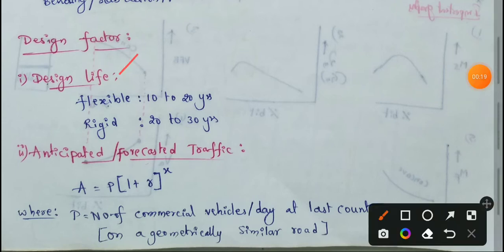First factor: design life. We have two types of roads — flexible pavement and rigid pavement. We provide flexible pavements a design life of 10 to 20 years. For expressways, the design life is 10 years. For state highways and national highways, it is 15 years.